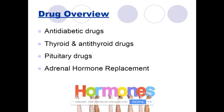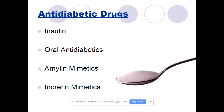A drug overview for this system includes anti-diabetic medications, thyroid and anti-thyroid medications, pituitary medications, and adrenal hormone replacements. Anti-diabetic drugs include insulin, oral anti-diabetics, amylin mimetics, and incretin mimetics.